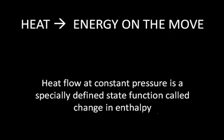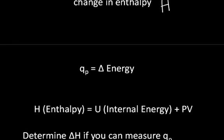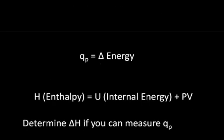In the special condition in which heat is flowing at constant pressure, one can determine a change in a thermodynamic state function called the enthalpy. Since heat flowing indicates change, then heat — abbreviated here with the lower case q — at constant pressure is equal to some change in energy. This change in energy has been called the change in enthalpy, delta H.